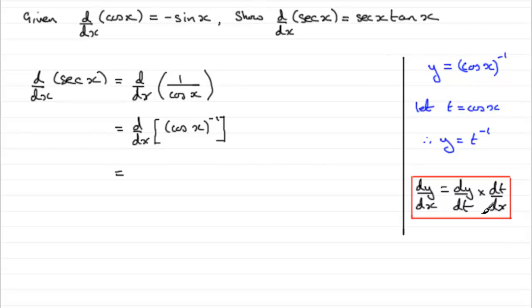When it comes to differentiating this, think of this then as t to the minus 1. So when we come to dy by dt, it's going to be minus t to the minus 2. But t is cos x, so we can write minus cos x all to the power minus 2. So that's dy by dt.